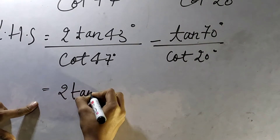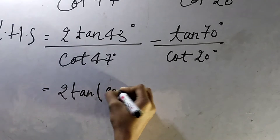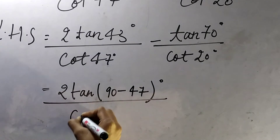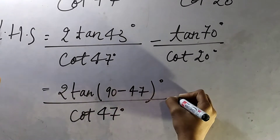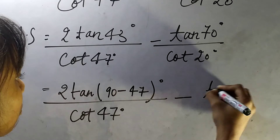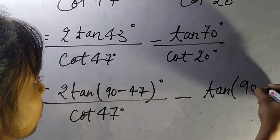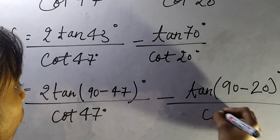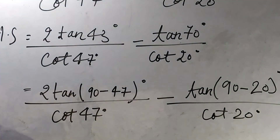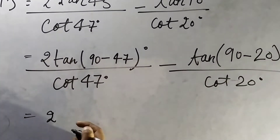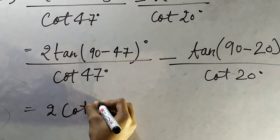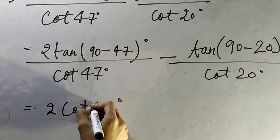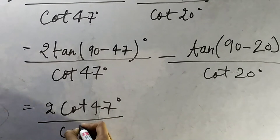We can write 2·tan(90°−47°)/cot(47°), applying the identity tan(90°−θ) = cot(θ). This gives 2·cot(47°)/cot(47°).